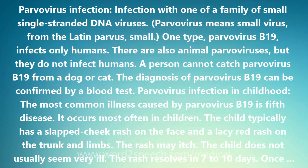Parvovirus Infection in Childhood: The most common illness caused by Parvovirus B19 is fifth disease. It occurs most often in children. The child typically has a slap cheek rash on the face and a lacy red rash on the trunk and limbs. The rash may itch. The child does not usually seem very ill. The rash resolves in 7 to 10 days. Once a child recovers, he or she has lasting immunity and is protected against future infection.